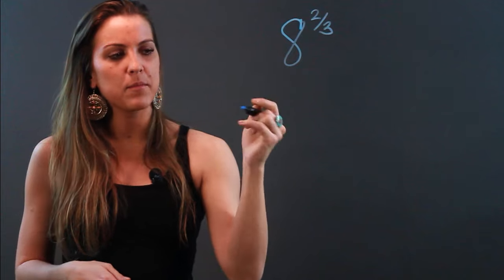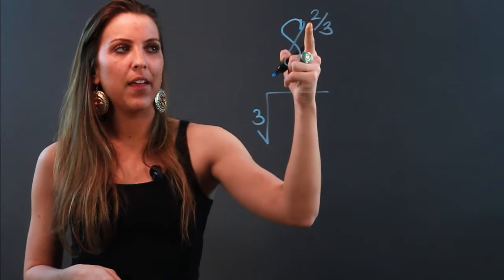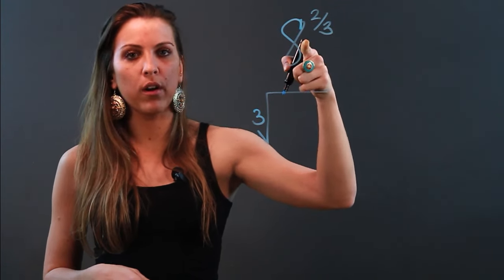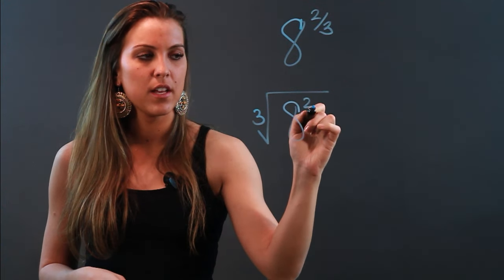That denominator of 3 becomes your root, so we're going to do the cube root. And the numerator becomes the new power of the base, so inside of this cube root, I'm going to write 8 to the second power.